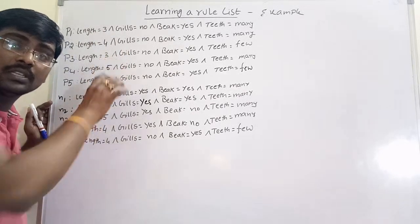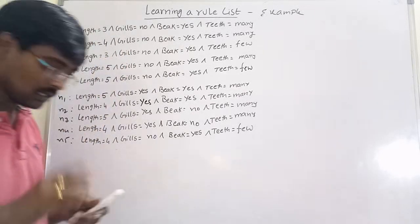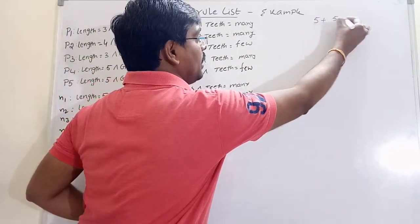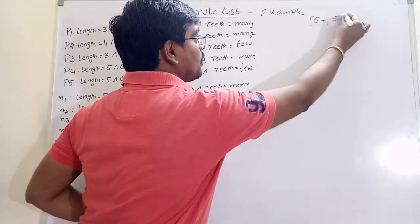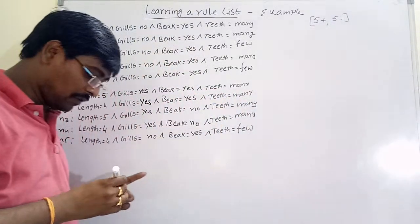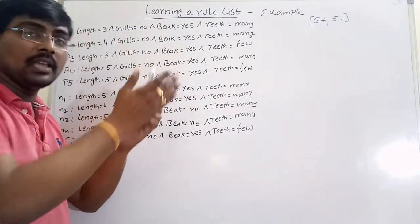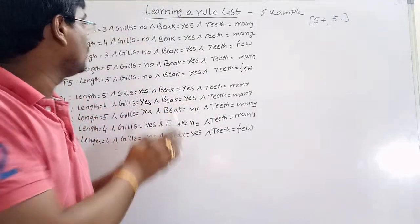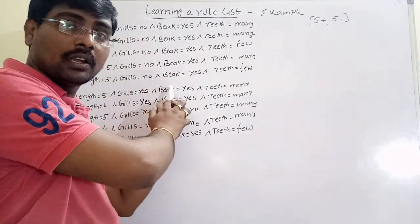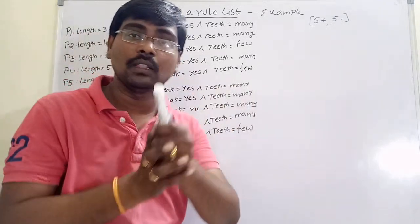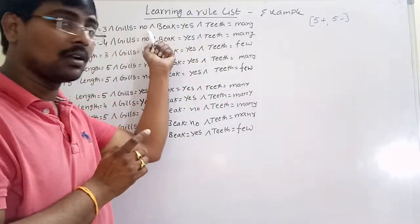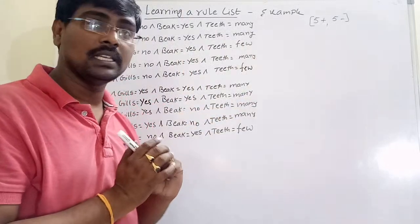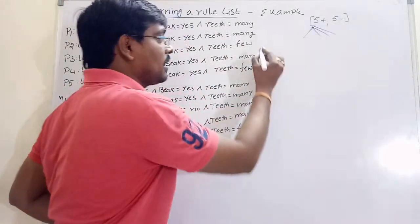We have five positive instances and five negative instances. Now we will categorize them: if length is equal to 3, 4, or 5, how many positives and negatives? Similarly for gills (yes or no), bake (yes or no), and teeth (many or few) — we will categorize each feature value.